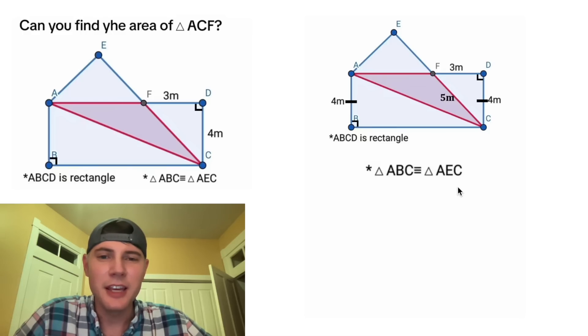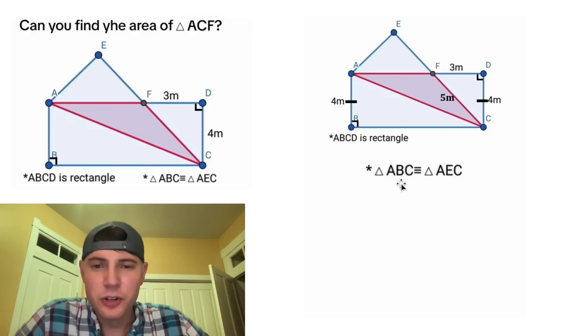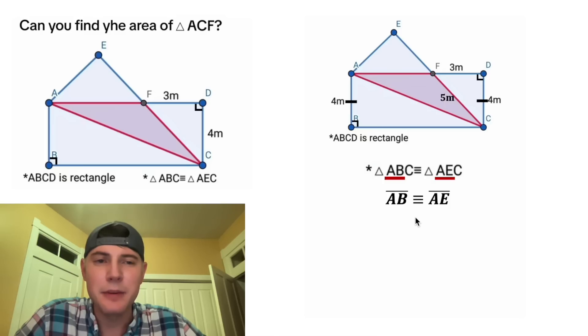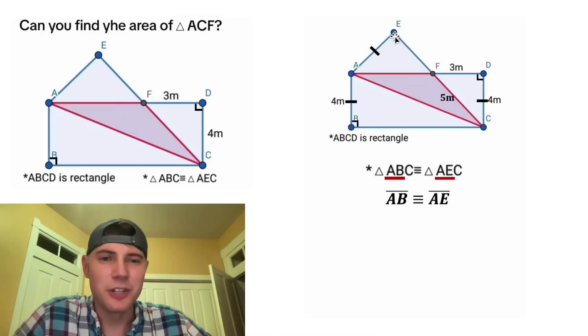Triangle ABC is congruent to triangle AEC. This order of these letters is very important. Since the first two letters of this are AB and the first two letters of this are AE, we know side AB is congruent to side AE. So we know that AB equals AE, which means we can label that as 4 meters.